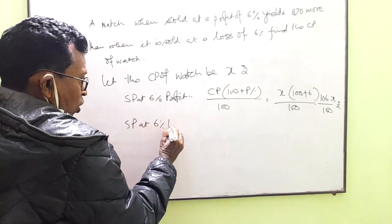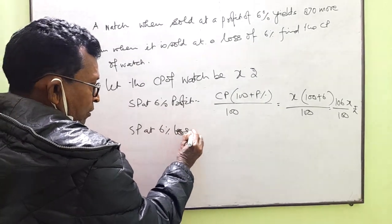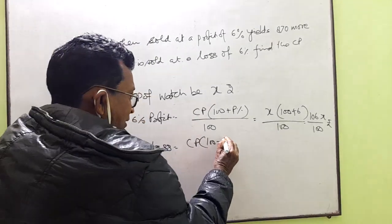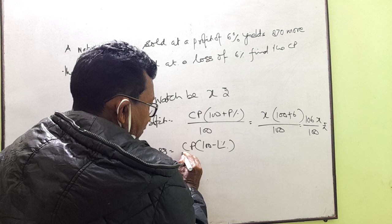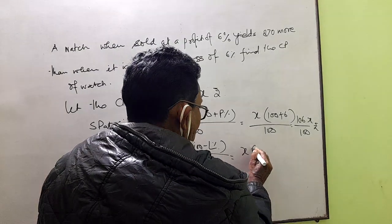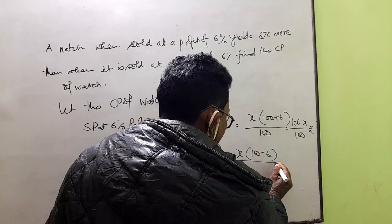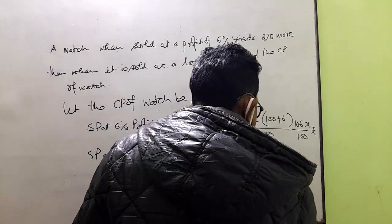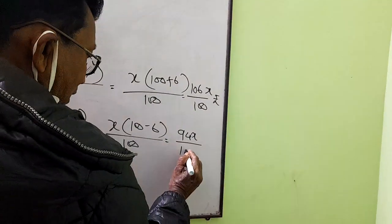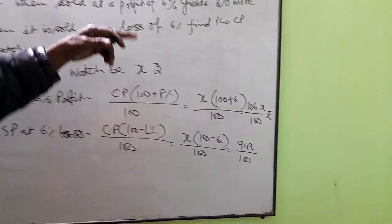SP at 6% loss is going to be CP into 100 minus loss percent divided by 100, and that is x into 100 minus 6 divided by 100. And it is 94x divided by 100.